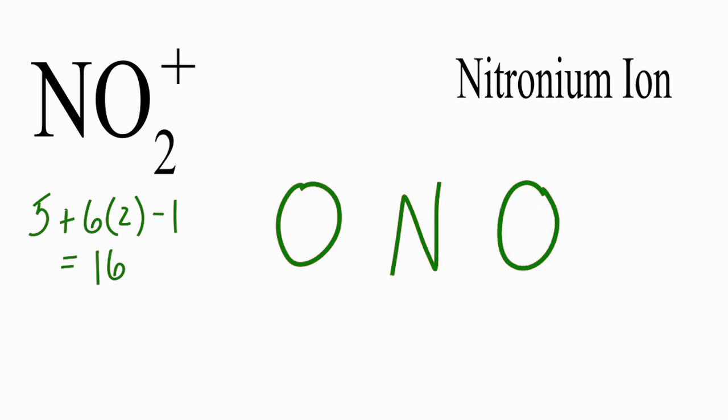We have 16 total valence electrons. We'll start by putting a pair between atoms to form chemical bonds, and then we'll go around the outside to complete the octets for the oxygen.